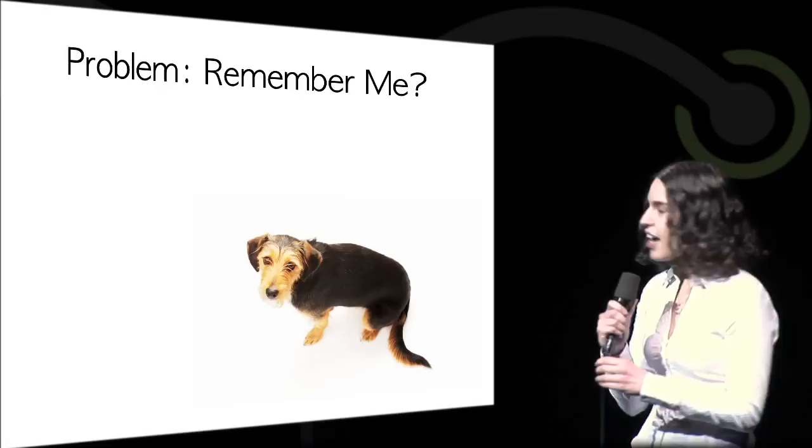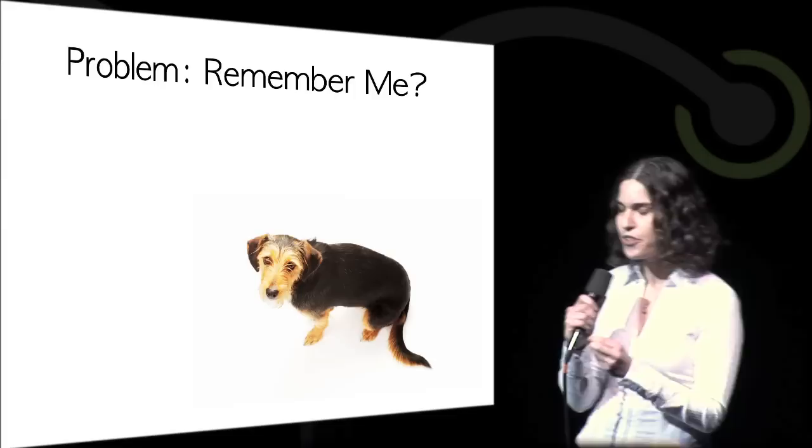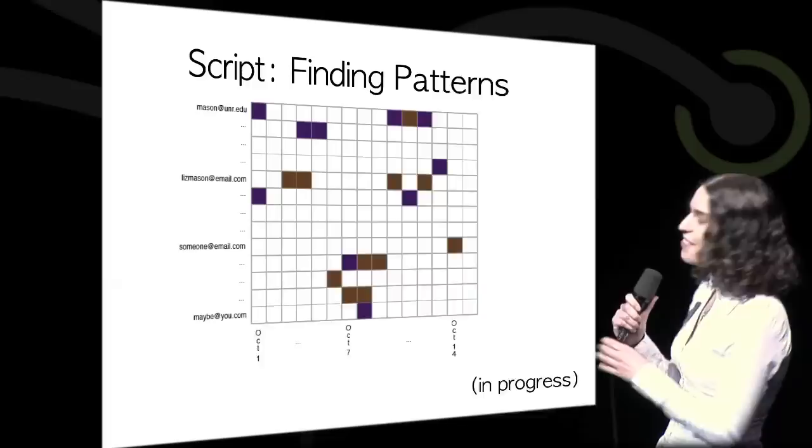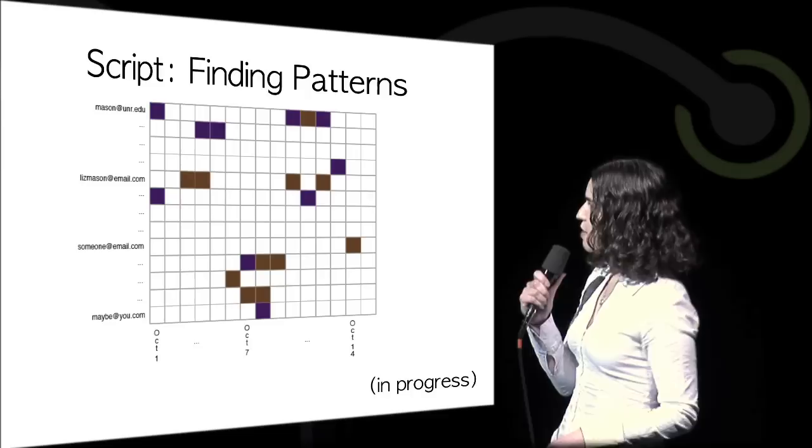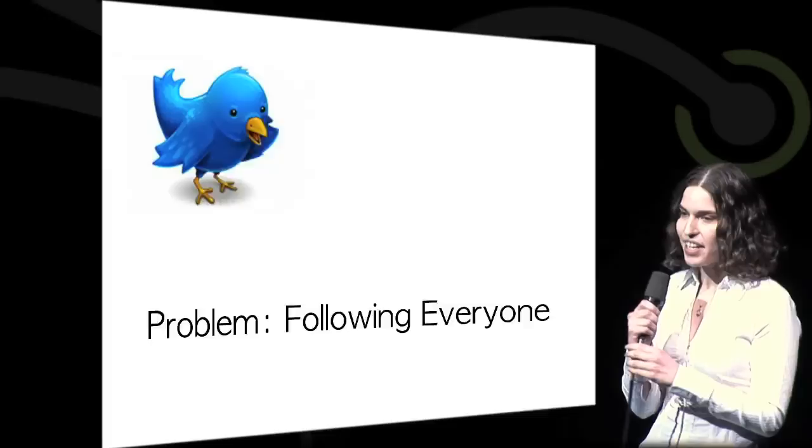So at events like this, you meet all of these awesome people. And then you probably send them a nice little message that says, hey, it was great to meet you. We should do something in the future. And then you forget all about them. At least I do. Until you run into them again. So wouldn't it be nice if your email could tell you who you had an initial contact with and then forgot to follow up with? It should definitely do that. The names here have been changed to protect the innocent.